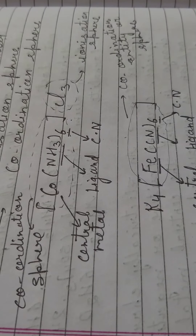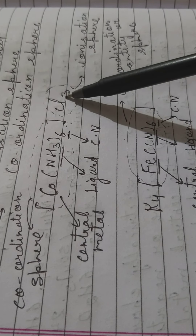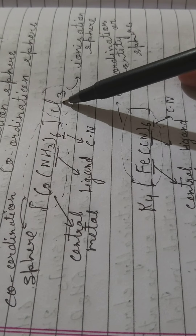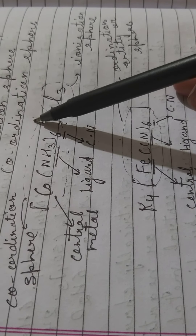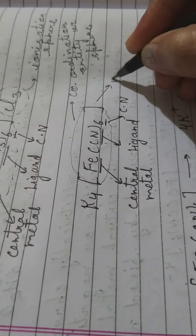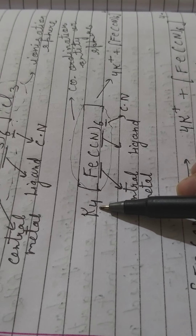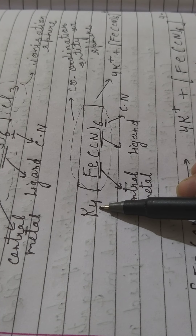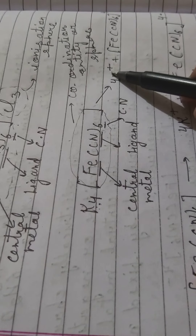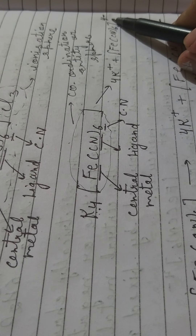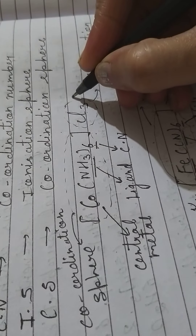The ionization sphere can be present either after or before the square bracket. Whenever that part is present after the square bracket, it brings a positive charge on the complex entity; whenever it is present before the square bracket, it brings a negative charge. For example, K4[Fe(CN)6] dissociates into 4K⁺ and [Fe(CN)6]⁴⁻, because cations are written first and anions later.